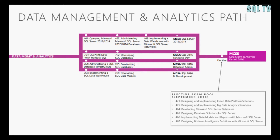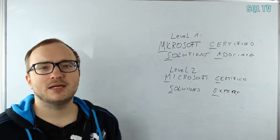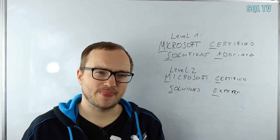As you can see in the picture, there are also three new possibilities — three new MCSAs. Each of them needs only two exams. You see exams 761, 762, 764, and so on. You can gain MCSA SQL 2016 in Database Development, Database Administration, or BI Development.